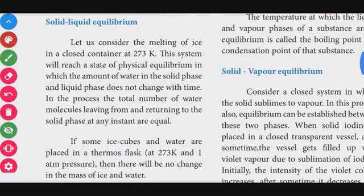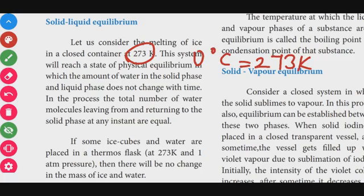The first example of physical equilibrium is solid-liquid equilibrium. The melting point of ice is 0 degrees Celsius, which is 273 Kelvin. At this temperature, the system is in physical equilibrium — the amount of water in the solid phase and liquid phase does not change. The solid and liquid phases coexist in the same amount.